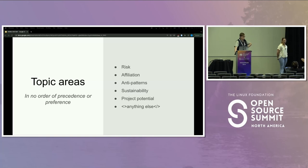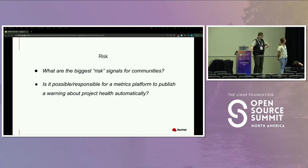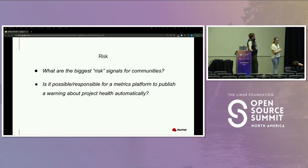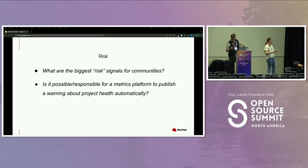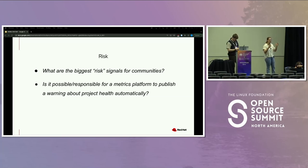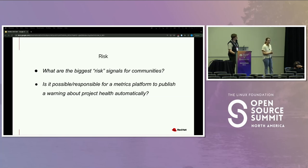Someone asks: what do we mean by risk, and how is it not the opposite of sustainability? The response: personally, I've been trying to figure out what people view as the biggest risk signals — whether it's unhealthy behavior within maintainers, commits activity, how many events, or if event attendance around a community has started to go down. Trying to talk about where people see risk in their communities.